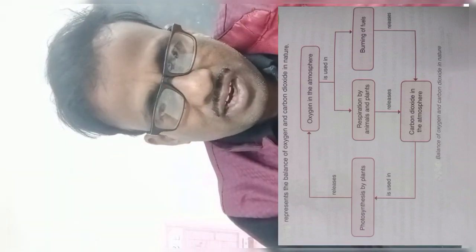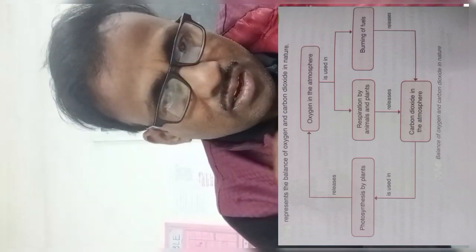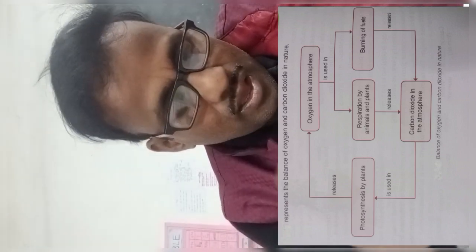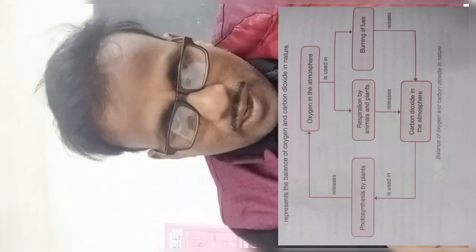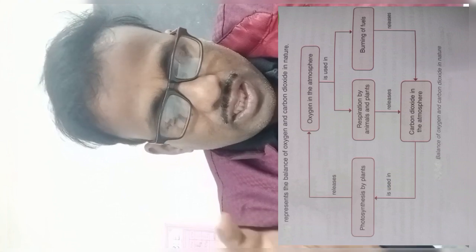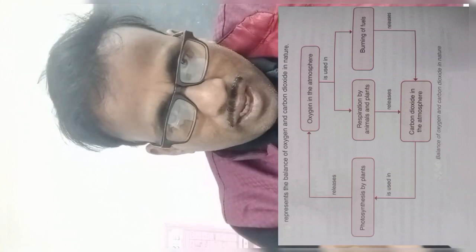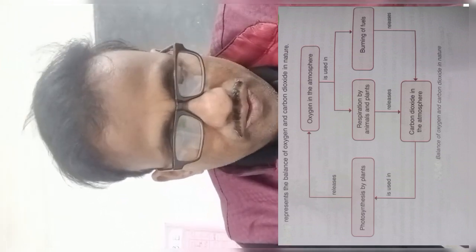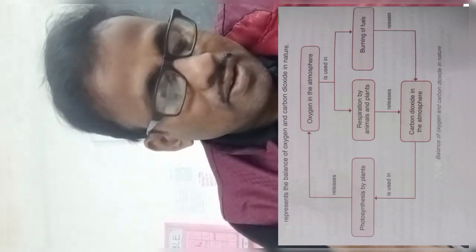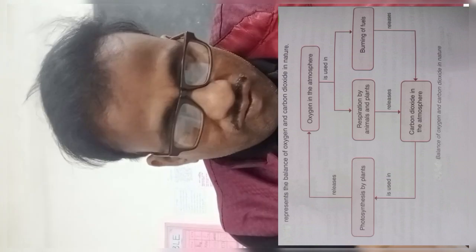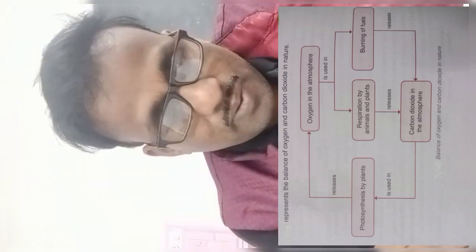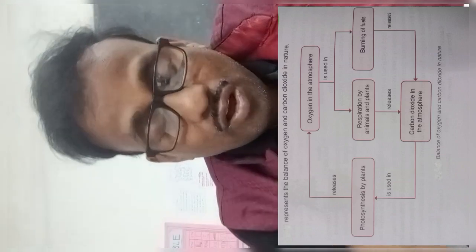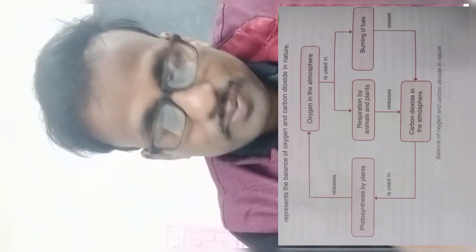This carbon dioxide is used by plants in photosynthesis. The carbon dioxide released by animals, plants, and burning is absorbed by plants for photosynthesis. So this is the balance of oxygen and carbon dioxide in nature.